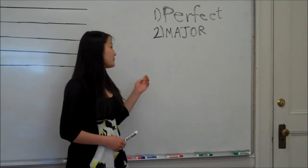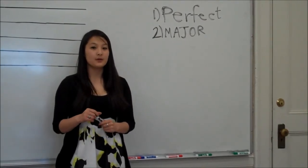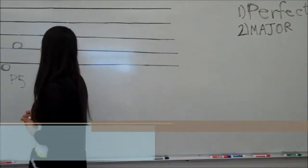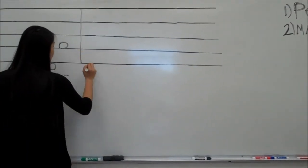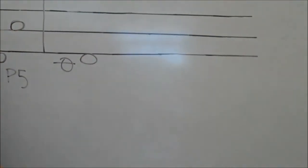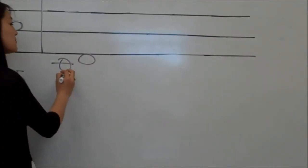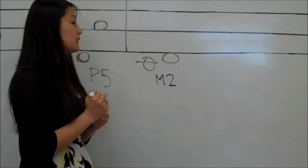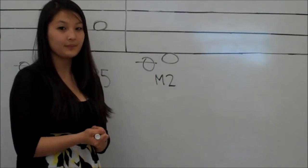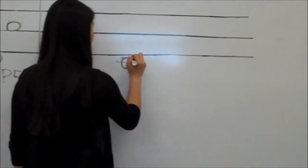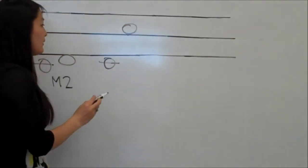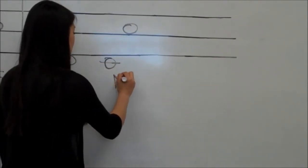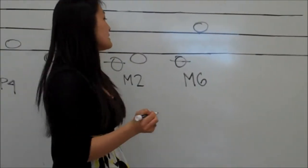Our next type of interval is the major interval, and it uses the same basic concept as the perfect intervals, but this is used with seconds, thirds, sixths, and sevenths. For example, if you had a C to a D, this would be a major second because we would count the C as one and then the D is two, and we know that it's major because D natural is in the key signature of C. Or, we could have a C to an A, which would be one, two, three, four, five, six — so it would be a major sixth, and we know this because an A natural is also in the key of C.